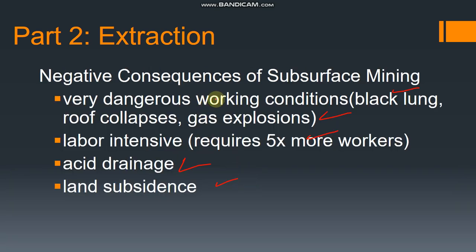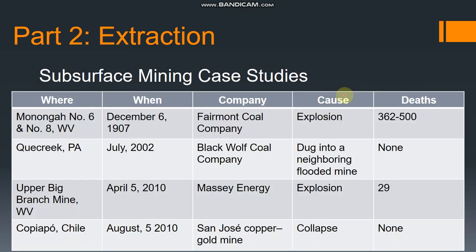Very dangerous work conditions include black lung disease — when workers in the mine shafts breathe in coal dust, they can develop lung cancer. A way to address this now is miners spray the sides of shafts with a limestone slurry mix, which keeps the coal dust at bay and keeps it from entering the mine atmosphere. There have also been mine explosions and collapses, such as those in Kew Creek, PA, and the Upper Big Branch mine in West Virginia that killed 29 people.